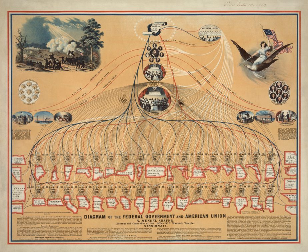The executive branch consists of the President and those to whom the President's powers are delegated. The President is both the Head of State and Government, as well as the Military Commander-in-Chief and Chief Diplomat. The President, according to the Constitution, must take care that the laws be faithfully executed, and preserve, protect and defend the Constitution. The President presides over the Executive Branch of the Federal Government, an organization numbering about 5 million people, including 1 million active duty military personnel and 600,000 Postal Service employees.